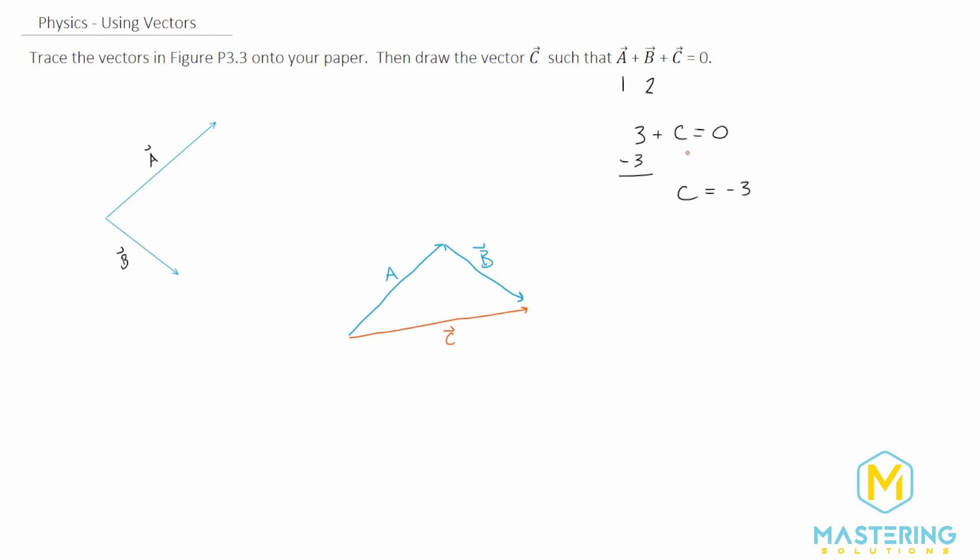Just like right here with A and B, to get it all to be zero, we need C to be the negative of what A and B add up to. Another way of saying that is if you add A and B together, C has to be the negative value of A and B together.